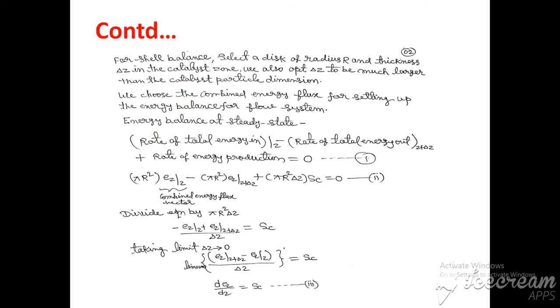Now we divide this equation by pi R square delta z to get: Ez at z plus delta z minus Ez at z divided by delta z equals Sc. We take the limit delta z tends to zero and apply the definition of first derivative to get equation third: dEz by dz equals Sc.